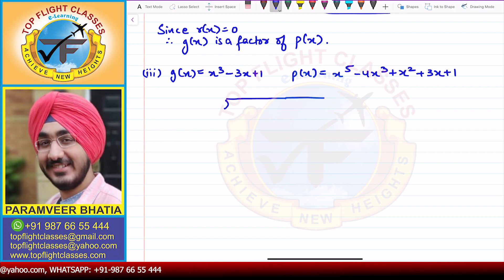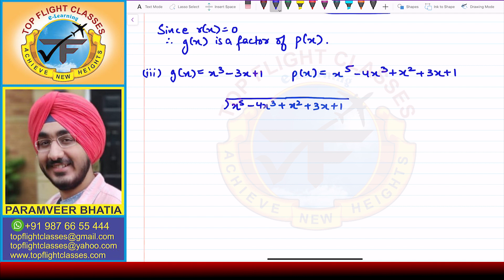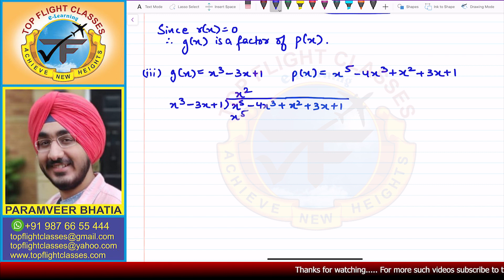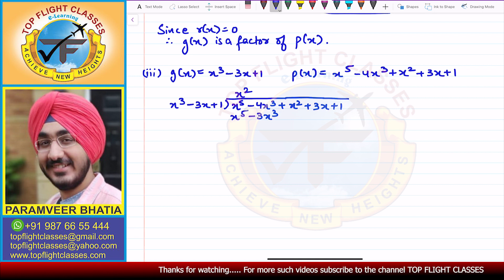We divide p(x) = x⁵ − 4x³ + x² + 3x + 1 by g(x) = x³ − 3x + 1. To eliminate x⁵, I multiply by x²: x³ × x² = x⁵, −3x × x² = −3x³, and +1 × x² = +x².